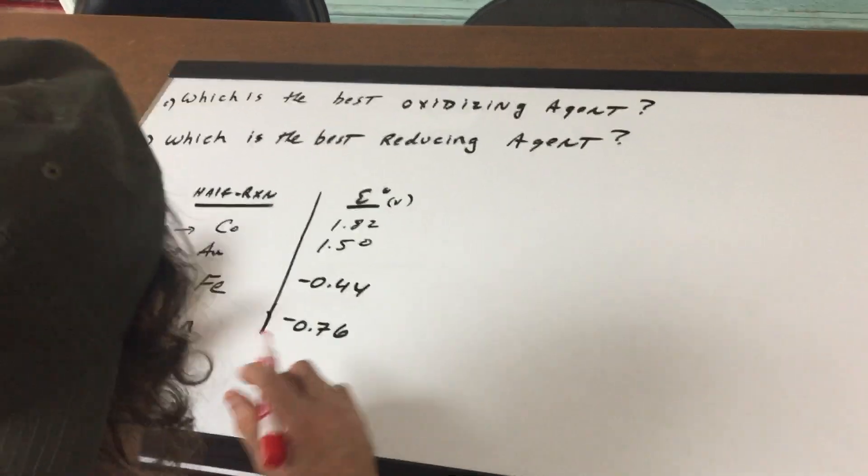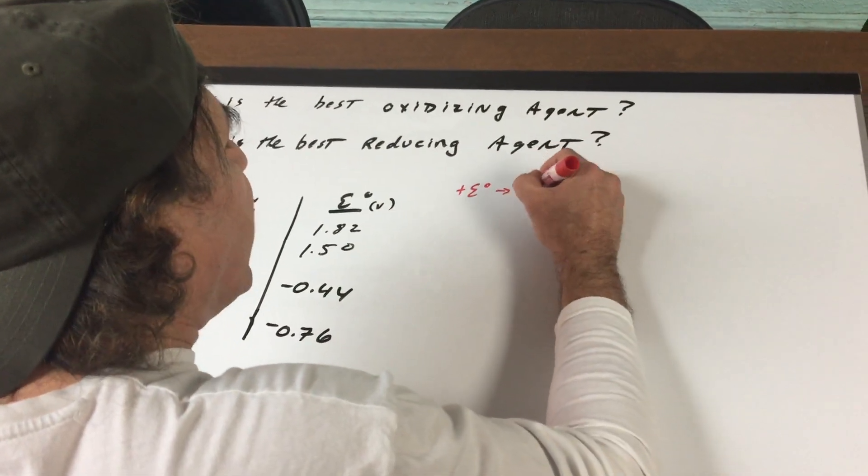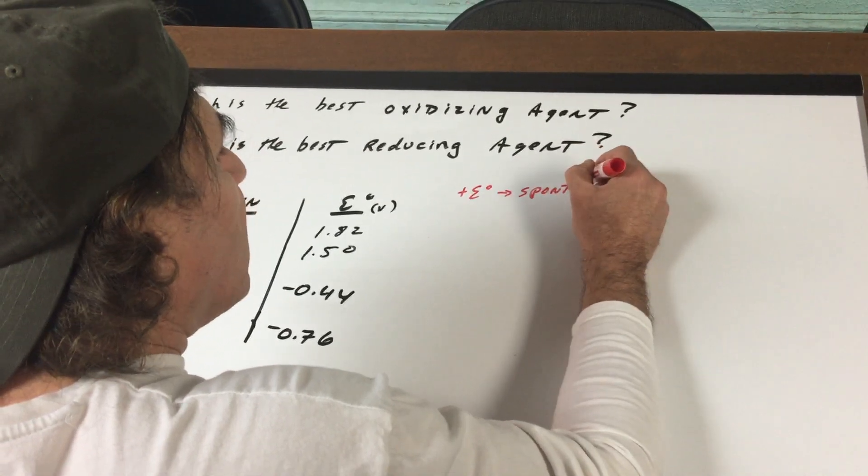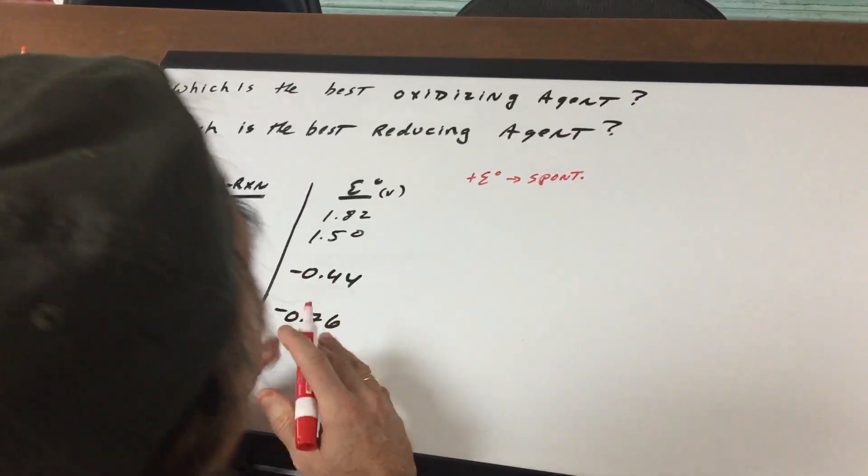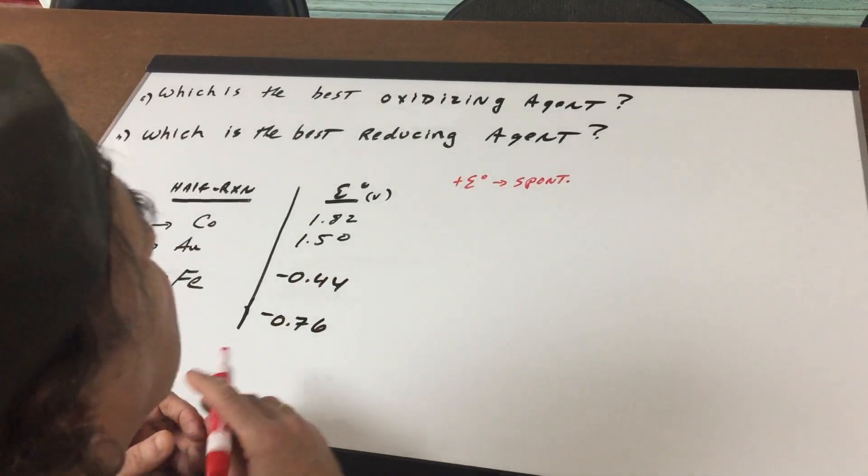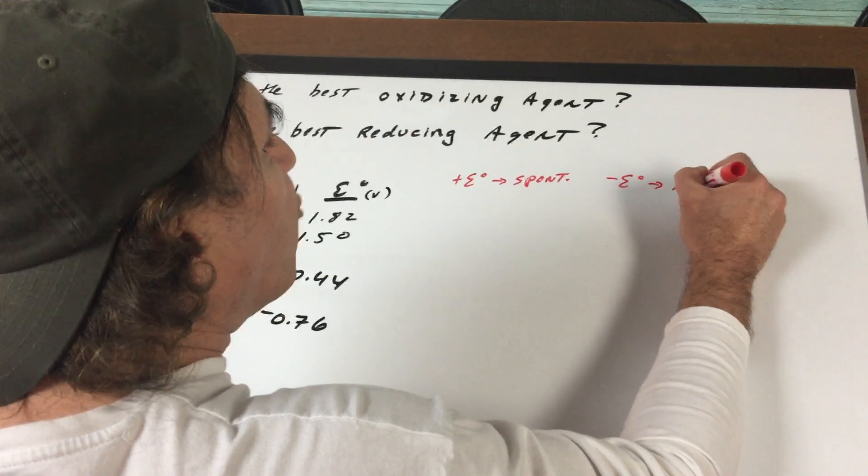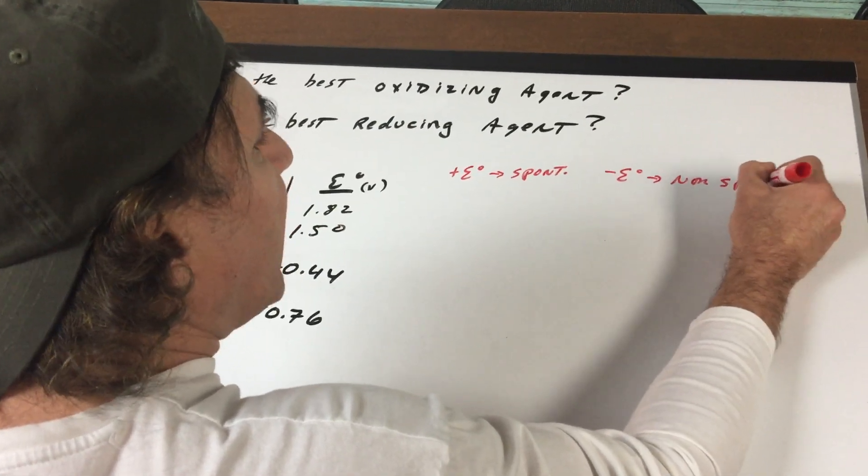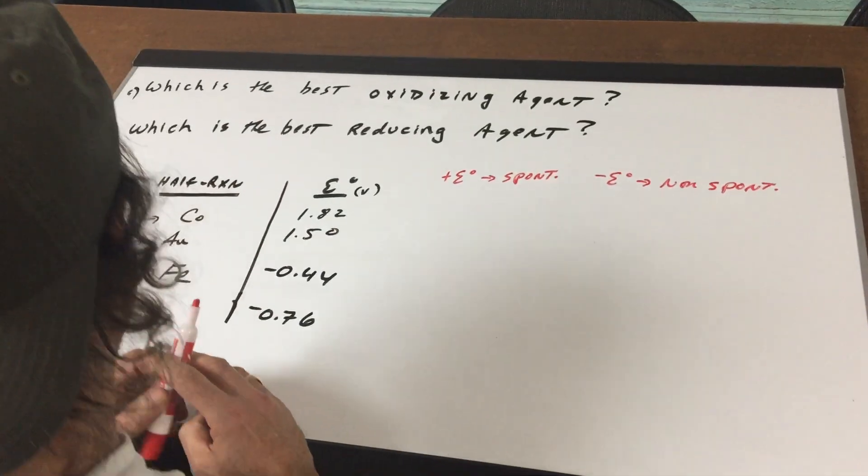First of all, a positive E0 means the reaction is spontaneous. That means that the reaction will go under its own direction when we're just mixing the chemicals together. A negative E0 means the reaction is non-spontaneous and that's when you need a battery or an external voltage source to make the reaction go.